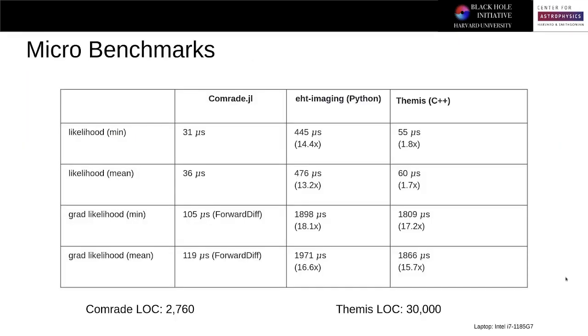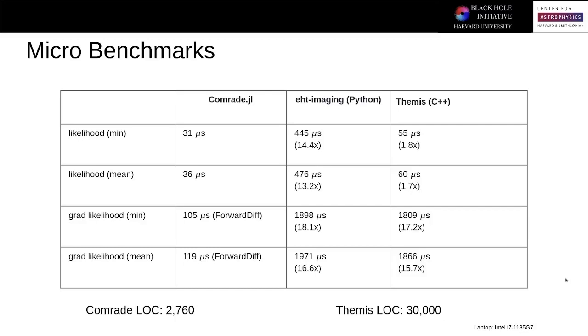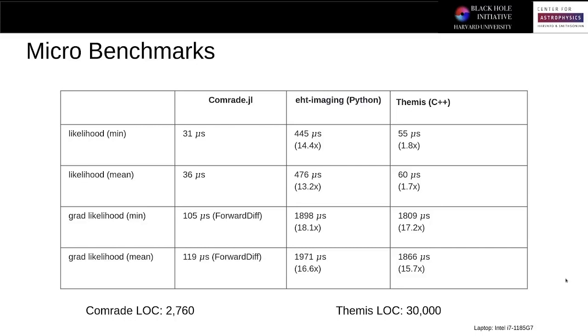Next, we started to analyze the performance characteristics of Comrade relative to EHT imaging and Themis. Pairing Comrade with EHT imaging, we found in all of our benchmarks that Comrade was at least an order of magnitude faster than EHT imaging. This was to be expected solely due to the performance characteristics of Python.